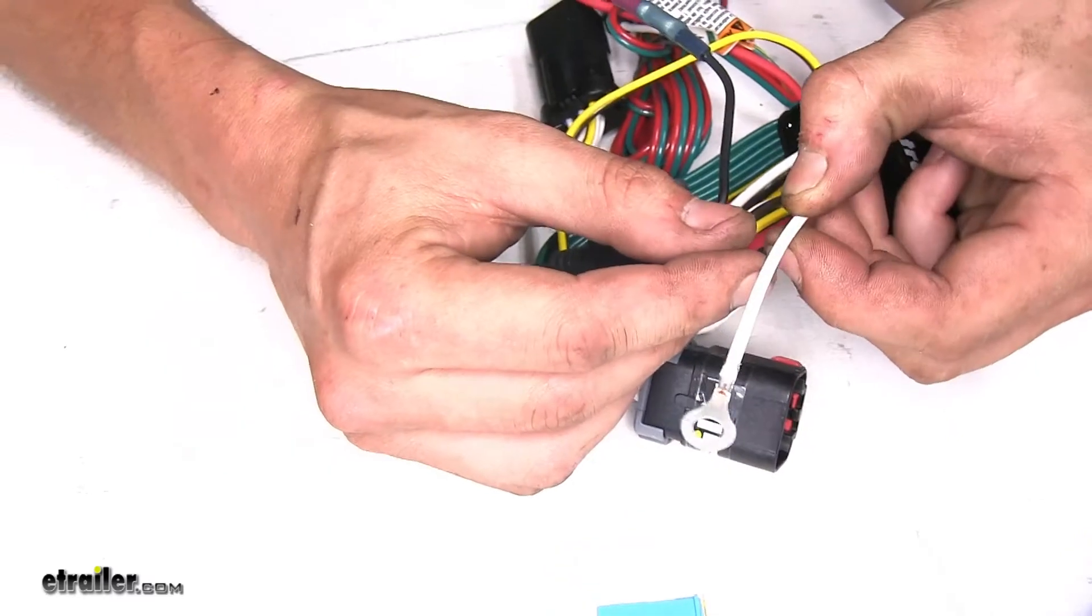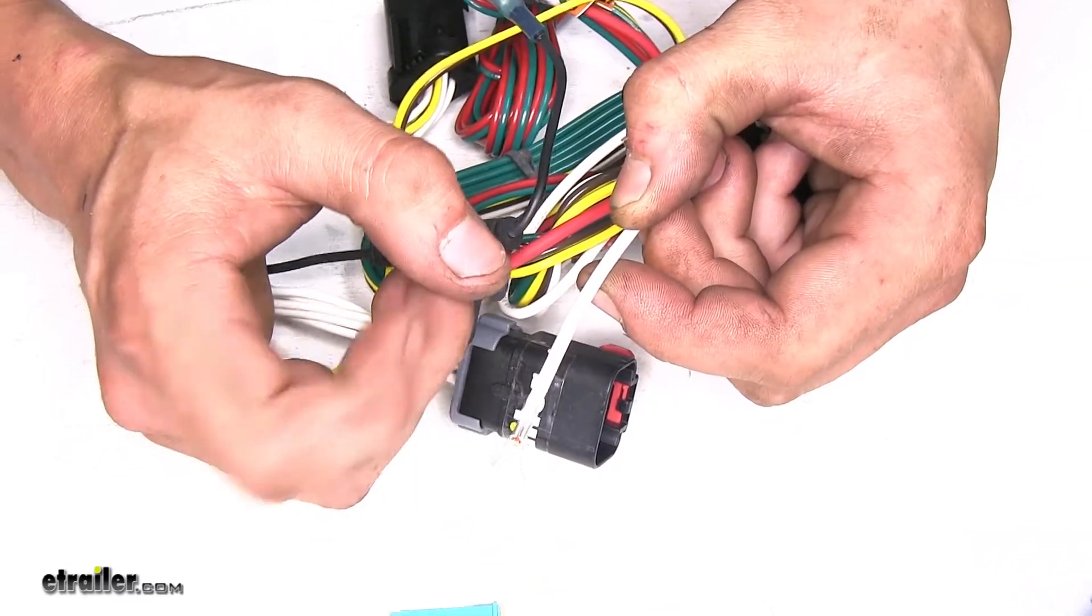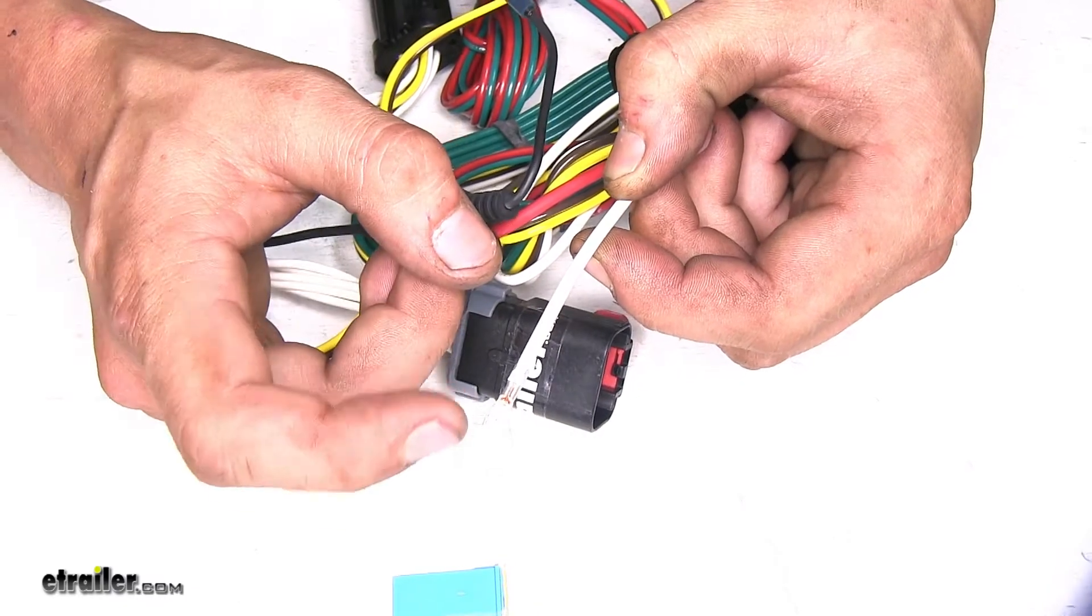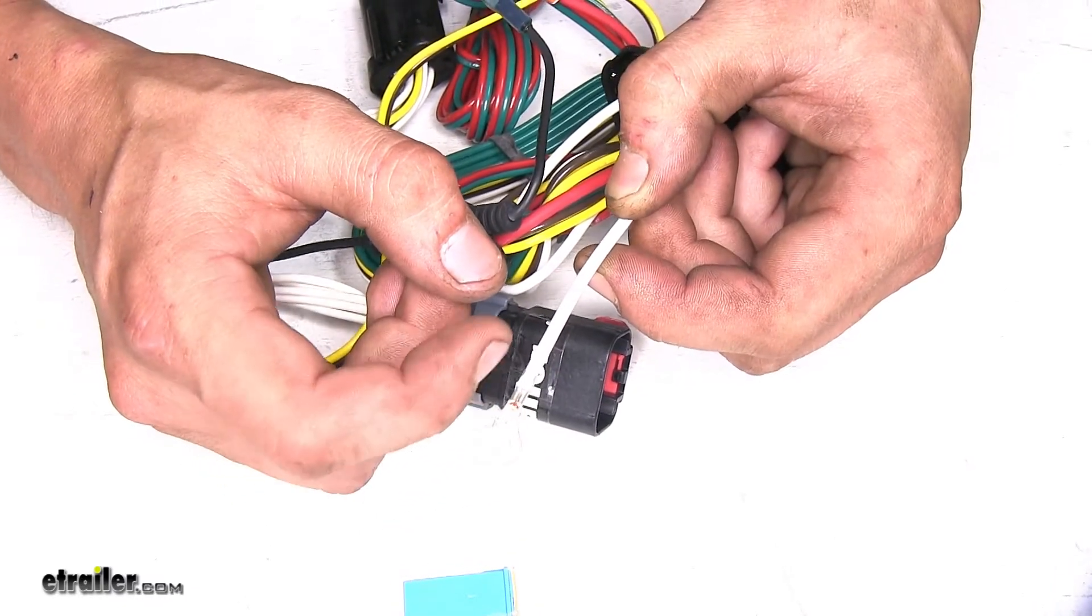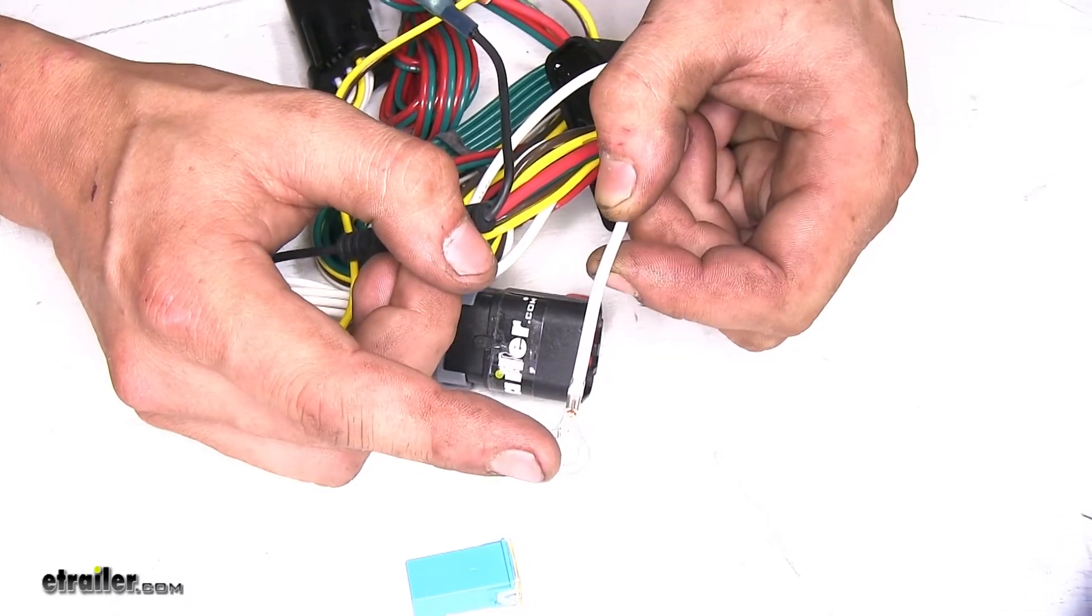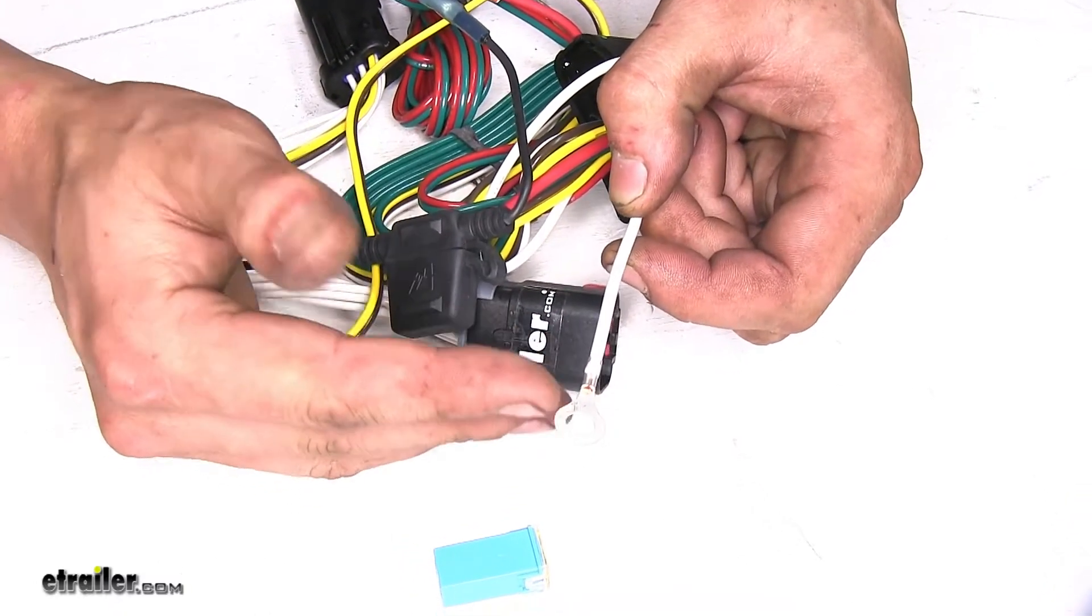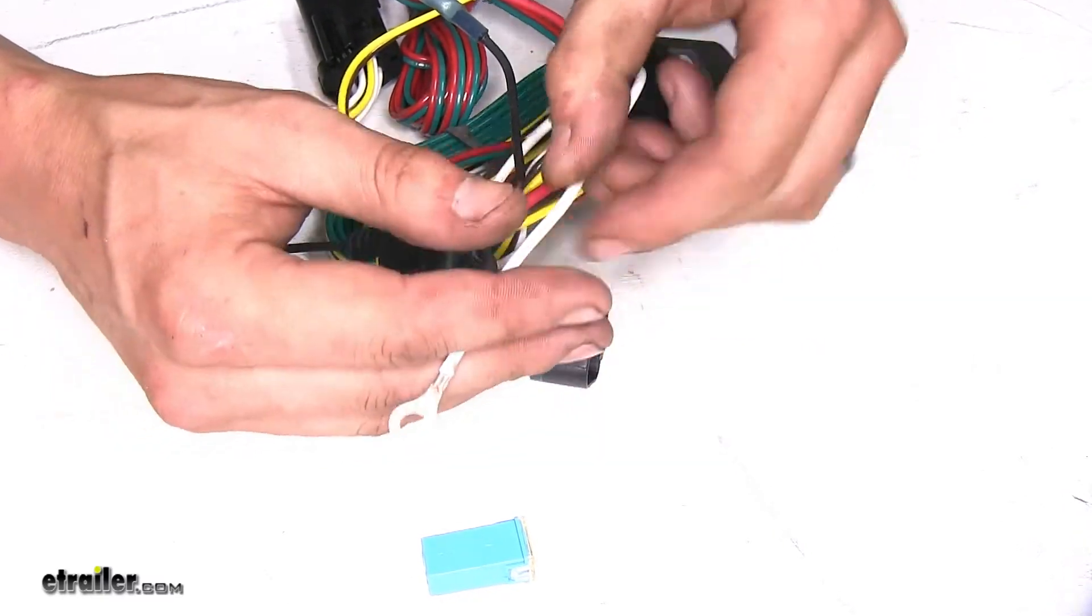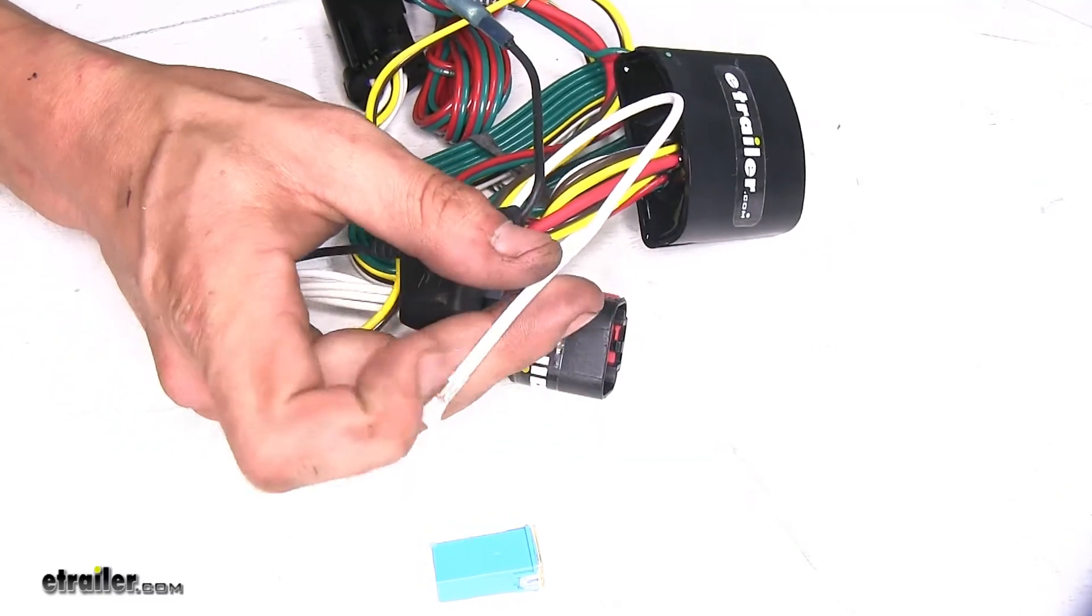Then we have a separate ground wire here, which we can attach to a grounding point inside the vehicle. There is a vehicle ground that is pre-existing in the vehicle that we can just attach this right to. This is nice because we're not relying upon the ground for our vehicle's factory taillights in order to run our module. It's putting less strain on the system.